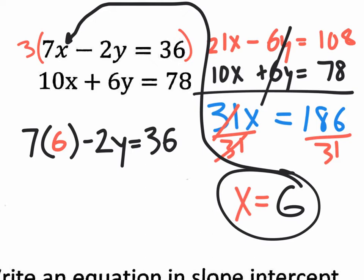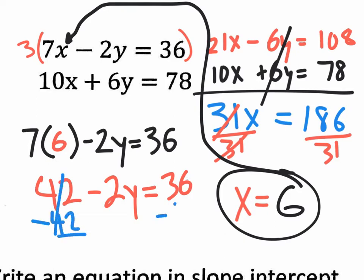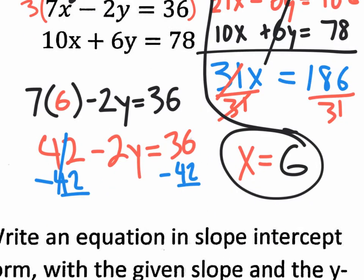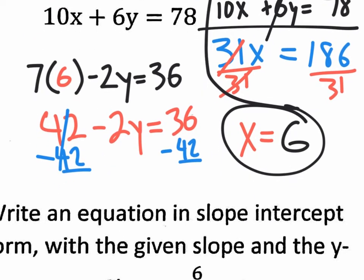It's going to say seven X, but instead of X, I'm putting a six in there. Minus two Y equals 36. So seven times six, 42 minus two Y equals 36. And then what do I do? Subtract 42. I have a new equation that reads, what's my new equation? Negative two Y equals negative six. And then I divide by negative two on both. And I'll get my final answer. Y equals positive three.